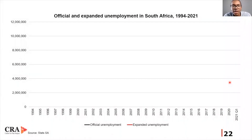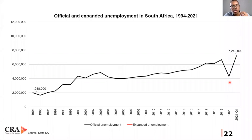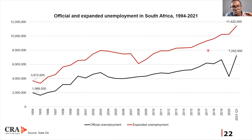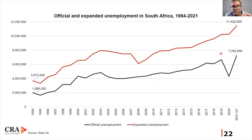It is unfortunately that of an unemployment crisis, which we gauge by looking at the official as well as the expanded number of people unemployed in the country from 1994 until the first quarter of this year. In absolute terms, on both indicators, the official unemployment level — shown by the black line — is greater than what it was in 1994. The expanded number of unemployed includes discouraged workseekers, represented by the gap area.